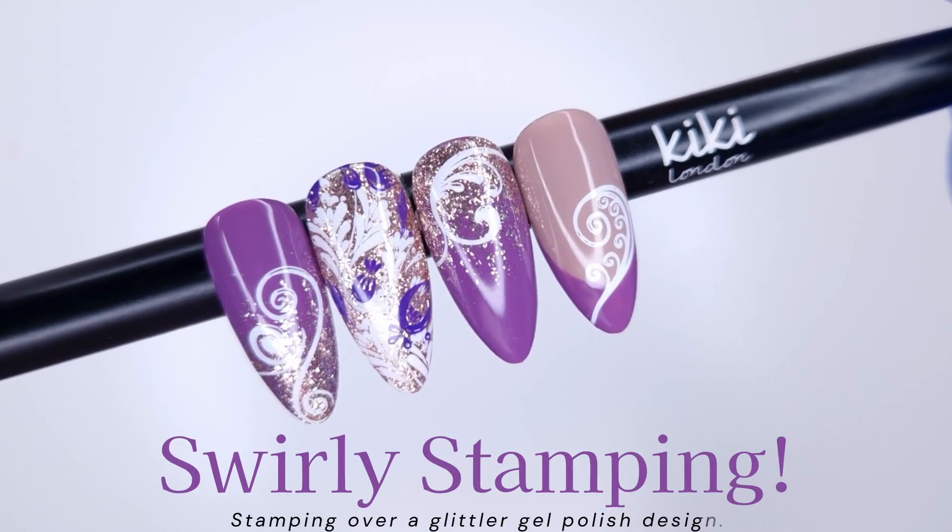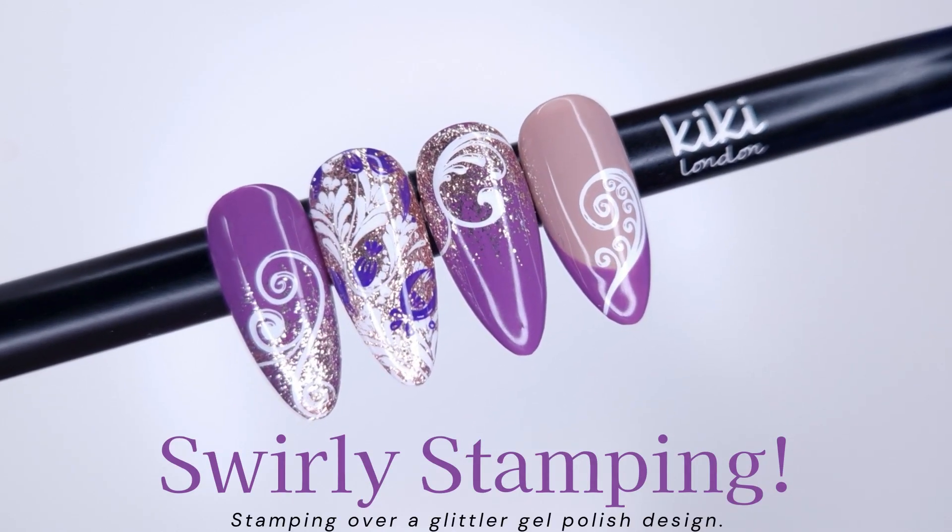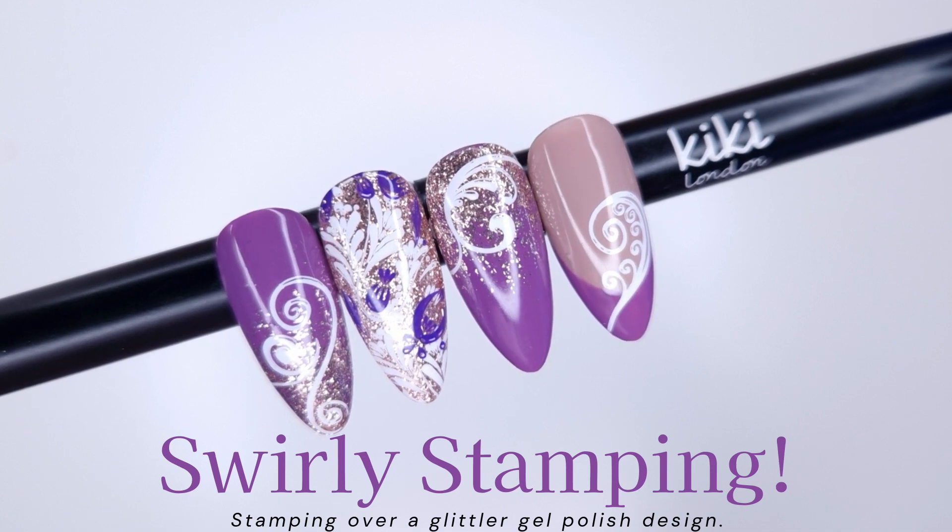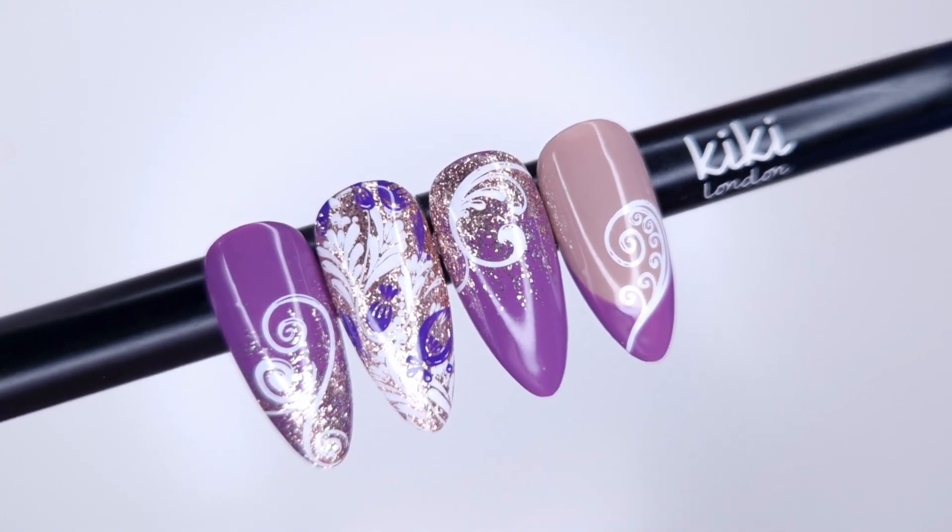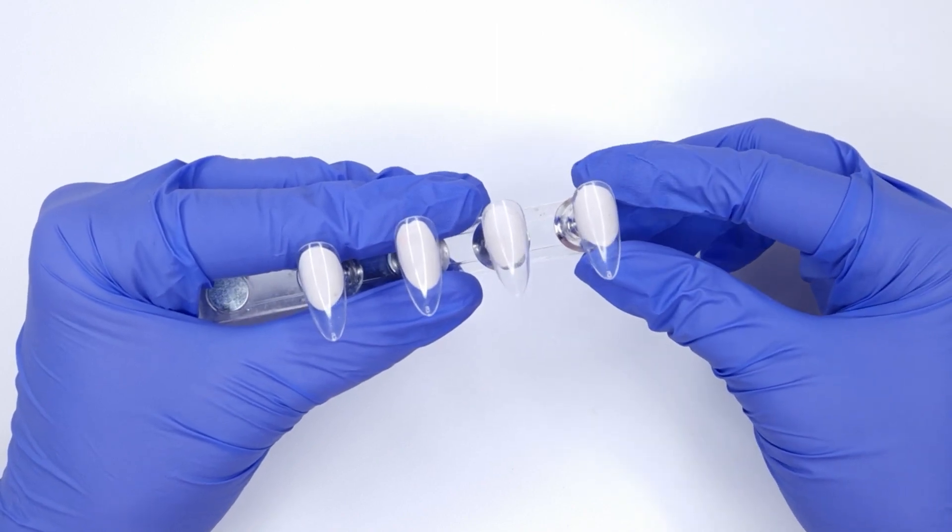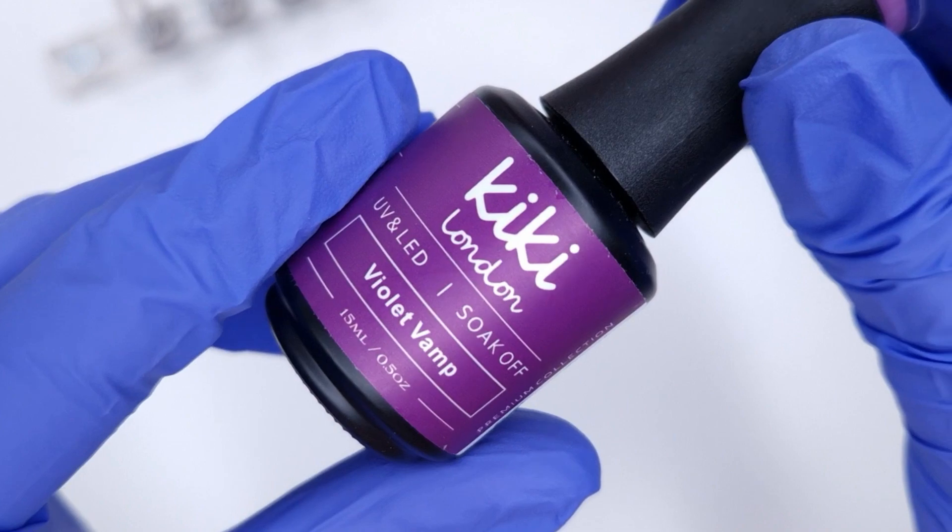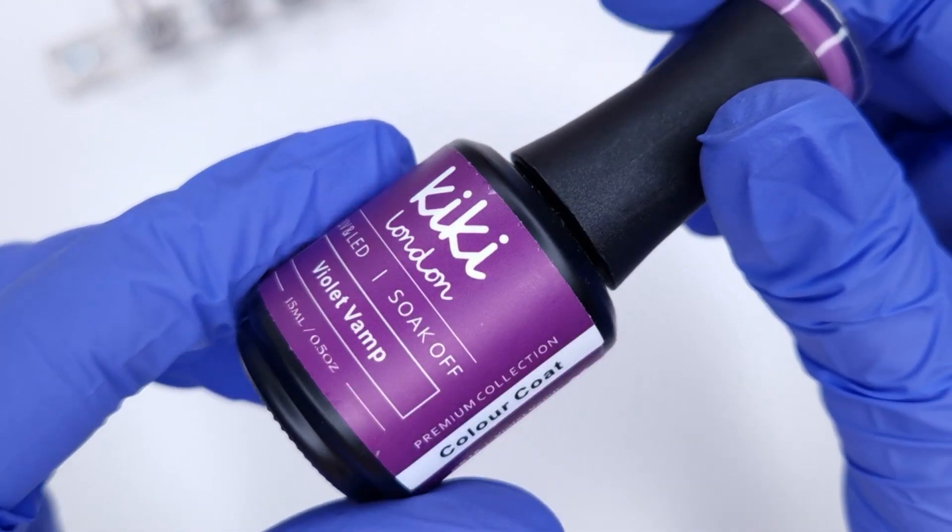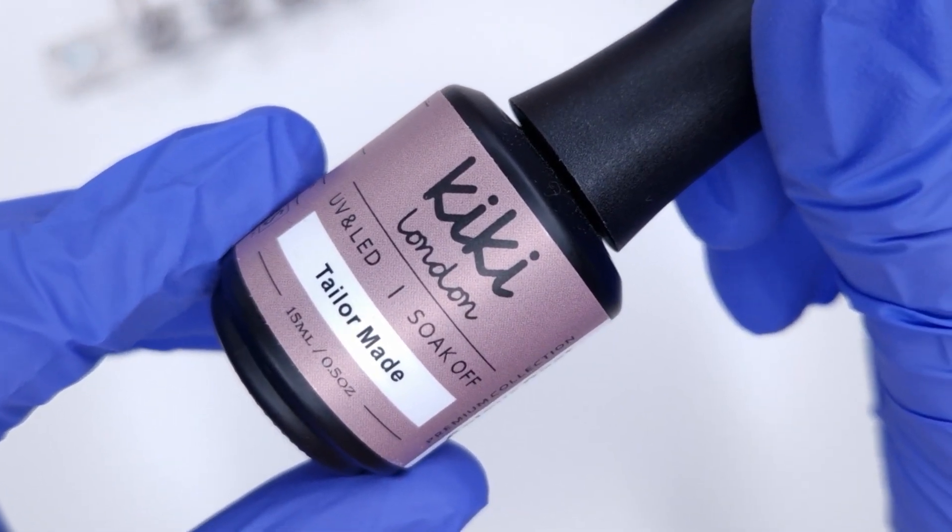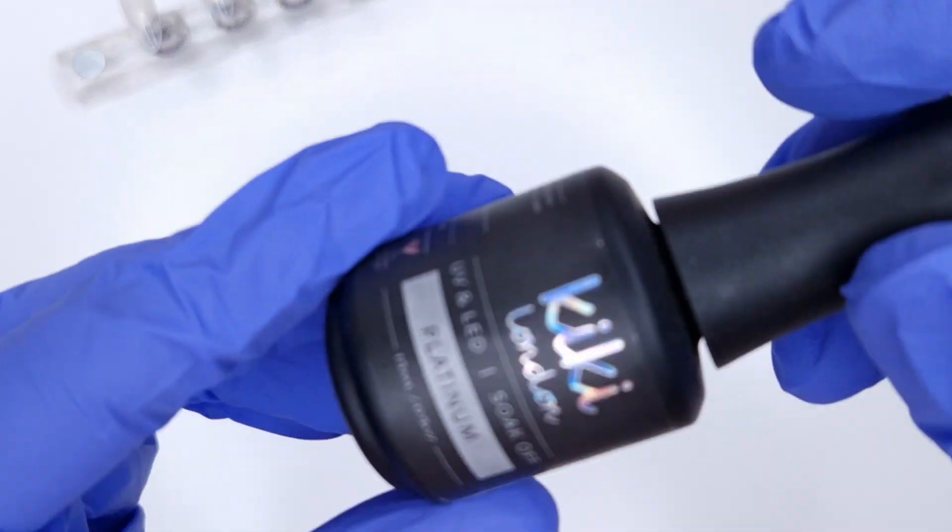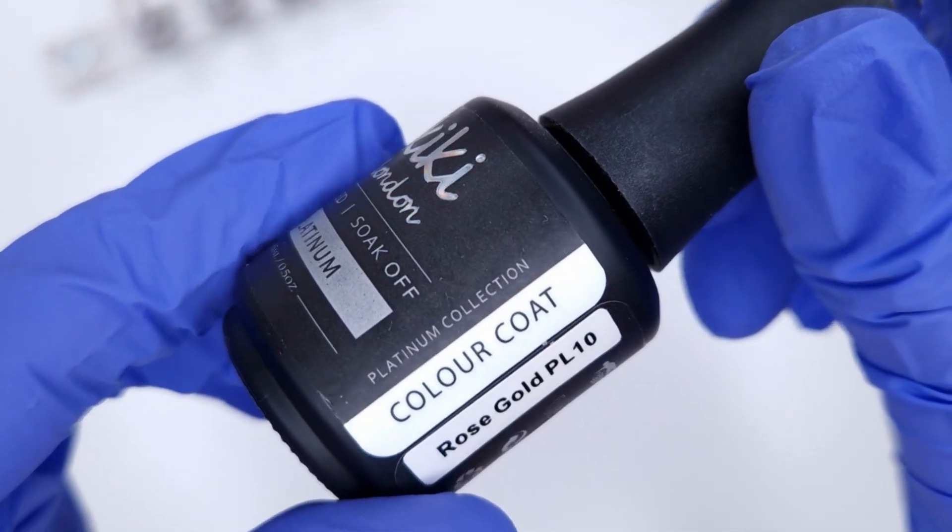Hello everyone and welcome to my channel. I hope that you are all good. So in today's video we're going to be doing a really pretty swirly stamping design over a glitter gel polish base. This particular video was requested on my channel. One of my lovely subscribers left me a comment saying that she'd recently got some glitter gel polishes and wanted to see some stamping over glitter gel polishes. So I thought I would put together a little design and share it with you guys. I really hope you all enjoy watching.